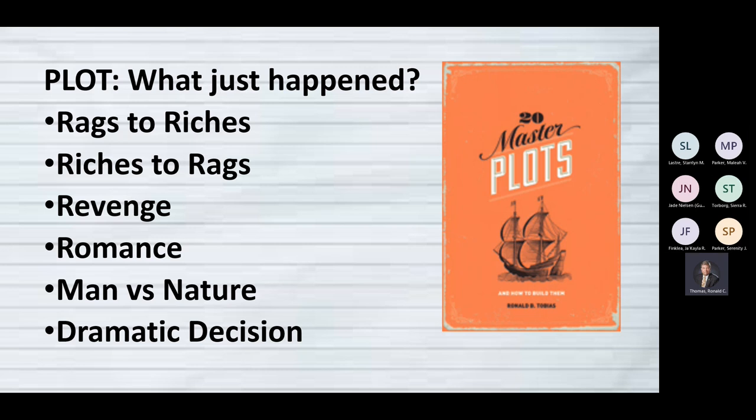If we believe that theory, there are a few basic types. We can talk about rags to riches like David Copperfield, where somebody starts out poor and works to become successful. Or a story where they start out rich, lose everything, and learn a moral lesson — like the Book of Job. We can have revenge stories, romance stories, or even man versus nature, where a character is put out in the wilderness and has to survive.